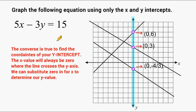The converse is also true to find the coordinates of your y-intercept. Wherever your lines cross your y-axis, the x-value shall always be zero. Notice how these points are located at different spots on the y-axis, so the y-values are going to be different. However, the x-values are all going to have a value of zero, because none of them are located to the left or to the right of zero on the x-axis — they are all exactly at zero on the x-axis.